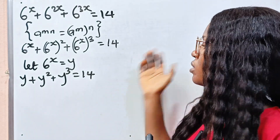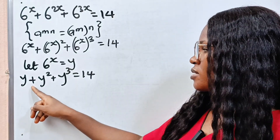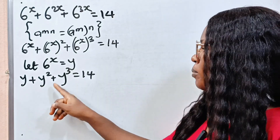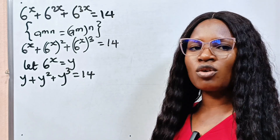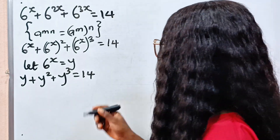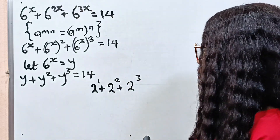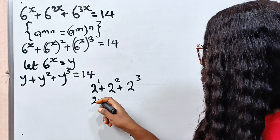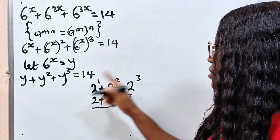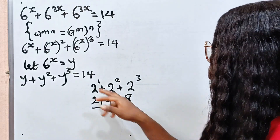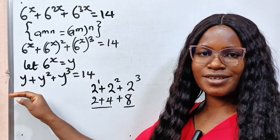A particular number raised to the power of 1, plus the same number raised to the power of 2, plus the same number raised to the power of 3, and if we add everything together, we get 14. The smallest number we can start with is 2. If you check 2 to the power of 1 plus 2 to the power of 2 plus 2 to the power of 3, you get 2 plus 4 plus 8. 2 plus 4 is 6, and 6 plus 8 is 14. So we can express 14 as 2 plus 4 plus 8, making both sides equal.